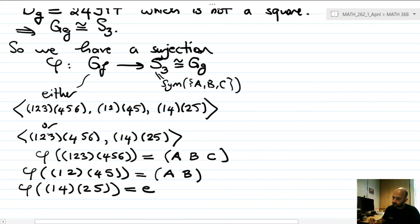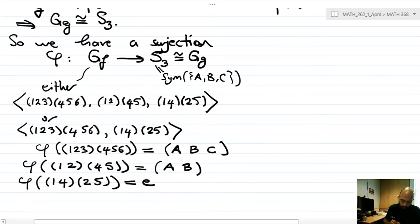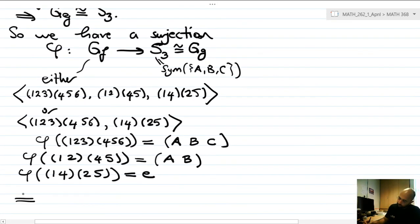If we had the second order 12 group as G_f, then (1 4) or (2 5) would definitely go to identity, and the other one would go to a three-cycle. So the image would be A_3 and not S_3. Therefore that cannot be the case. You need something that should go to a transposition, and that can only be this (1 2)(4 5).